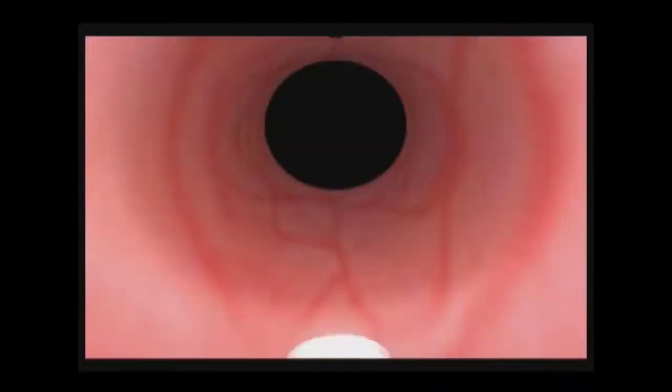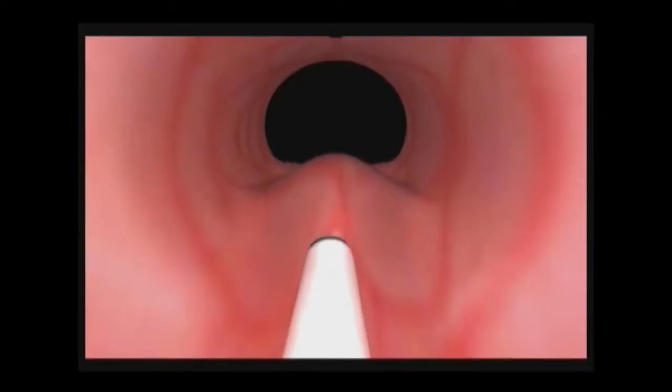The bolus created at the 6 o'clock position is the largest. You will inject one entire 2.5 milliliter syringe of macroplastique in this position. Begin by locating the 6 o'clock position.